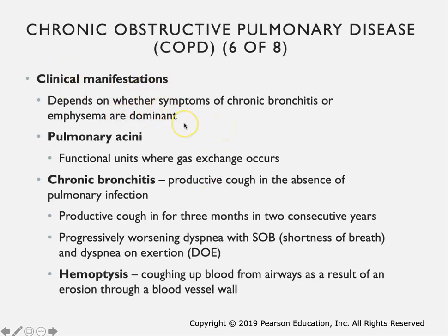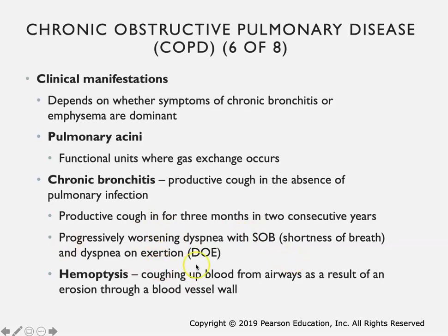In terms of clinical manifestations, it depends on whether symptoms are contributed more to the chronic bronchitis or the emphysema. In chronic bronchitis, you're going to end up with a productive cough - mucus coming up when there is no infection. If you have this productive cough for three months in two consecutive years, you can then be diagnosed with chronic bronchitis or COPD. You get progressively worsening dyspnea with shortness of breath, dyspnea on exertion, and coughing up blood is another symptom because of erosion of the blood vessel wall due to ongoing damage to the bronchioles.